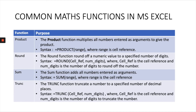The first math function is PRODUCT. The PRODUCT function multiplies all numbers entered as arguments to give the product. The syntax is: =PRODUCT(range), for example =PRODUCT(A1:A5), where the range is the cell reference.